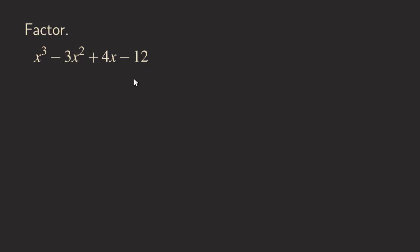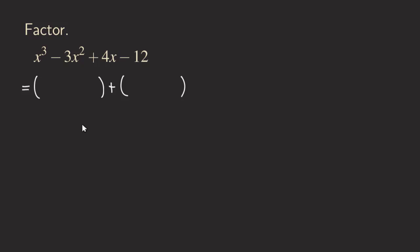This is the first example and I would say that this is an easier example compared to the later ones we're going to see. It's really because there is a plus sign here separating the first two terms and separating the last two terms. So when we factor by grouping, we are going to first write it as two groups, putting parentheses, with a plus sign in the middle.